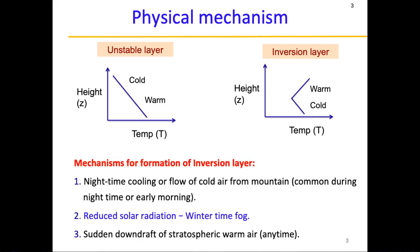So this is the formation of inversion layer. The mechanisms that aid in its formation are nighttime cooling or cold air flowing from the mountain. Sometimes the ground cools, making the layer above the ground colder, or there could be a flow of cold air from the mountain which undercuts the warm air, hence forming this stable layer.